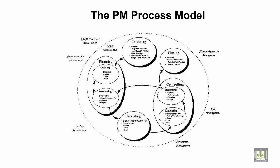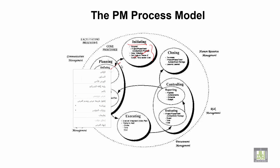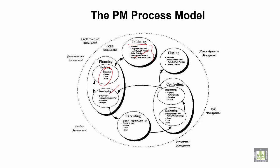In the initiating model, data collection and setting firm goals are very important. Planning involves developing objectives, time frame, budget, and schedule. Executing involves keeping a check on scope, time, and cost. Controlling means having proper control on progress. Then close the project. Outside these phases, human resource management, risk management, procurement management, quality management, and communication management are also involved — these will be discussed in the next slide.